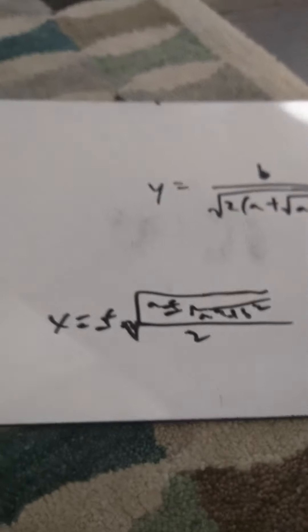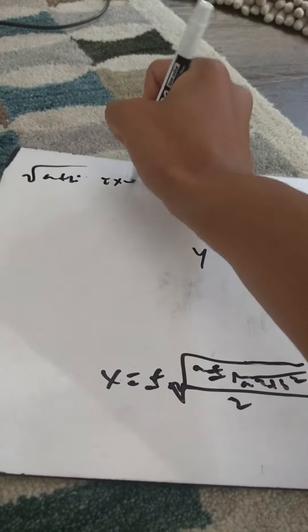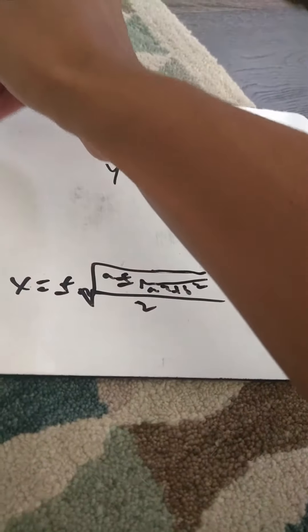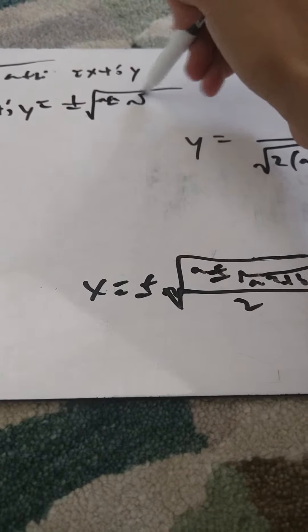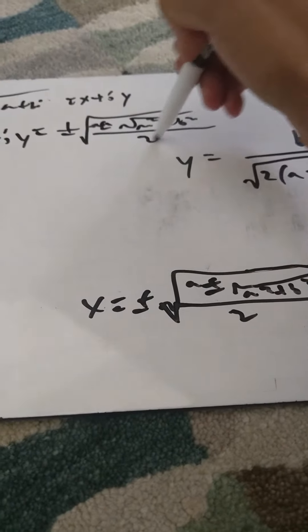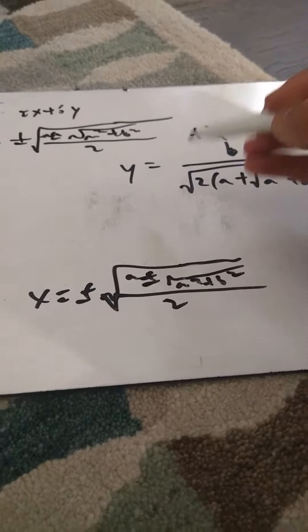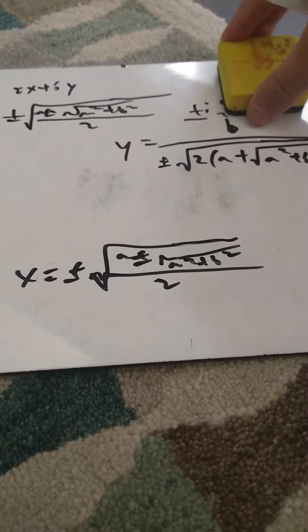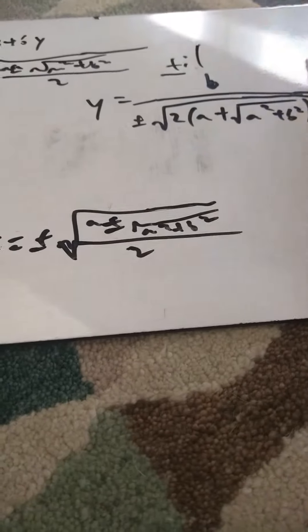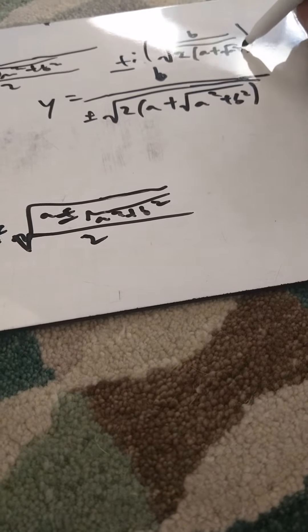So that equals y. And now we have the square root of a + bi equals x + iy. So now we can write x + iy equals plus or minus the square root of a plus or minus the square root of a² + b², all over 2, plus or minus i times b over the square root of 2 times (a + the square root of a² + b²). That gives you an idea of how I got the formula for the square root of a complex number.